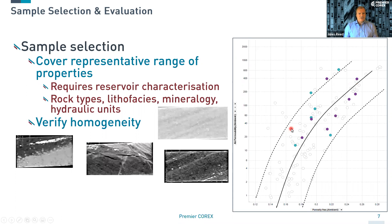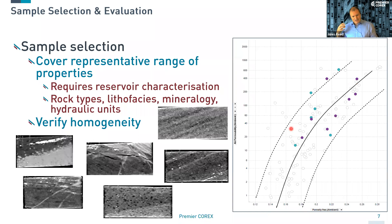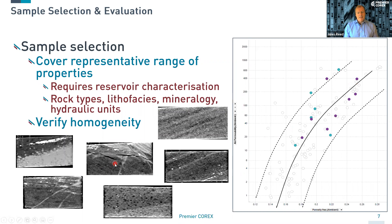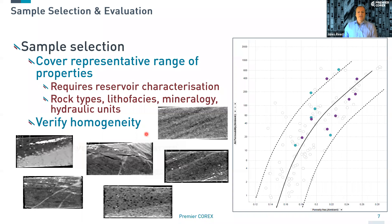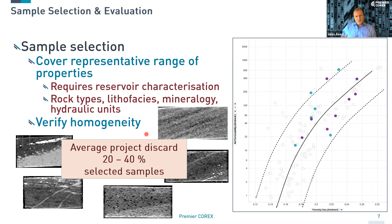We then want to check that our samples are homogeneous. We don't want samples with undesirable features, so we're doing CT analysis to check for that. Many of the calculations and analyses require that we have homogeneity, and interpretations are based upon that. We'd recommend always selecting at least 20 to 40% additional samples than you think you will need, as some will not be desirable for testing.